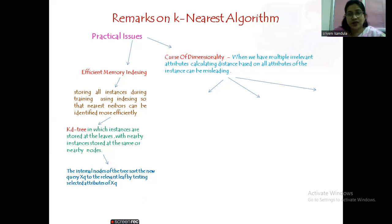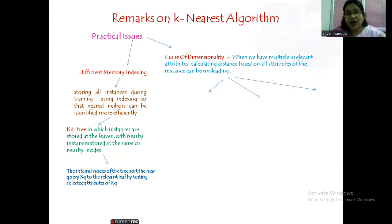The second practical issue is dimensionality. The examples we have solved have only three to four attributes, but suppose we have hundreds or thousands of attributes. We still need to consider all attributes to make a decision. However, if there are multiple irrelevant attributes, calculating distance based on all of them can be misleading. We need to reduce or remove irrelevant attributes.